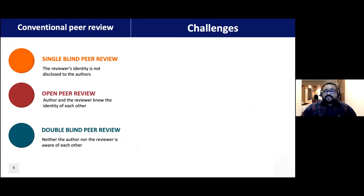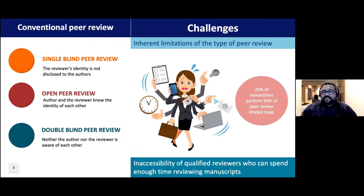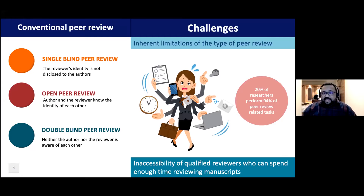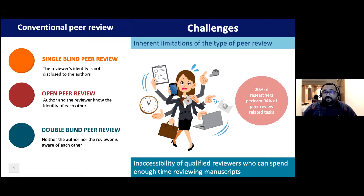There are different types of conventional peer review processes: single-blind, open peer review, and double-blind peer reviews. All three types have their own inherent limitations. One important challenge is the non-availability of qualified reviewers who can spend enough time reviewing the manuscript. Statistics show that 20% of researchers perform 94% of peer-reviewed tasks, clearly illustrating the extent of this problem.